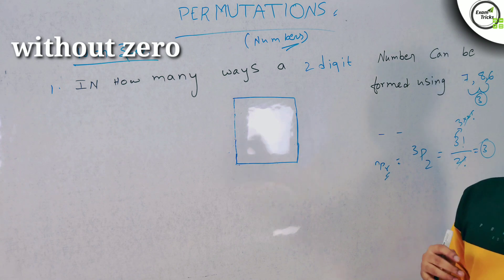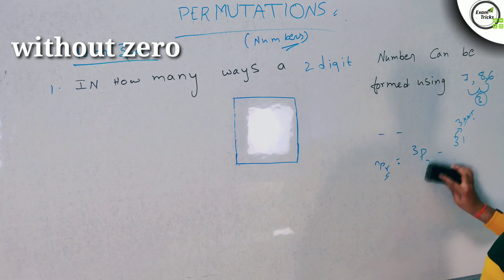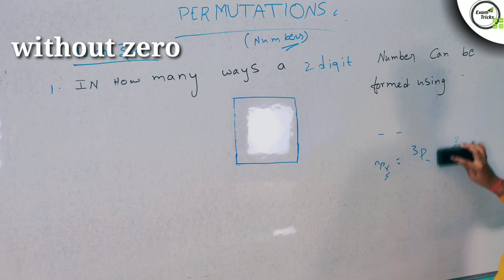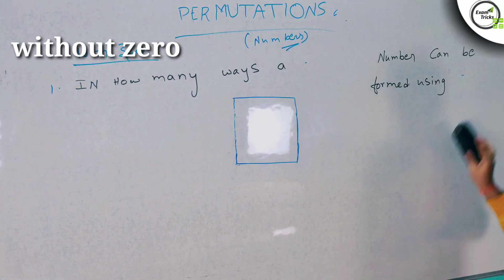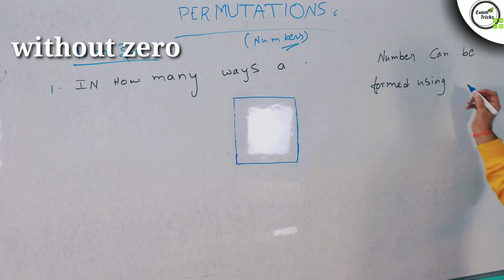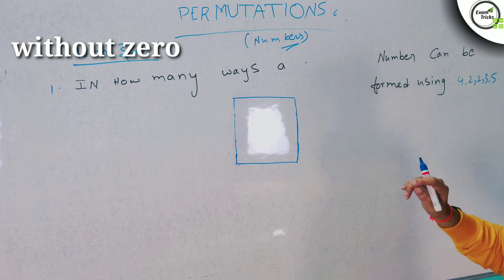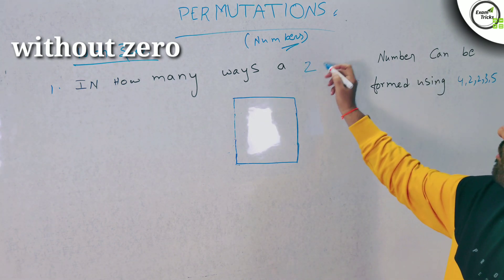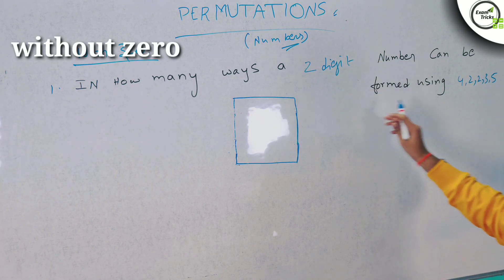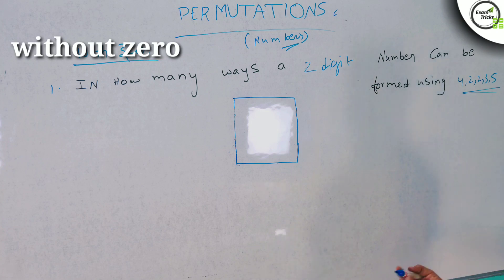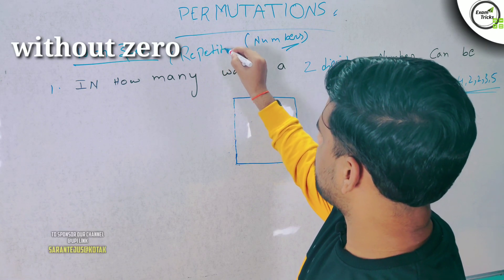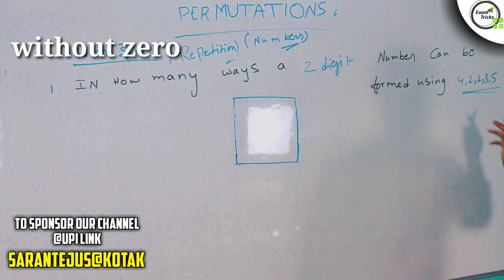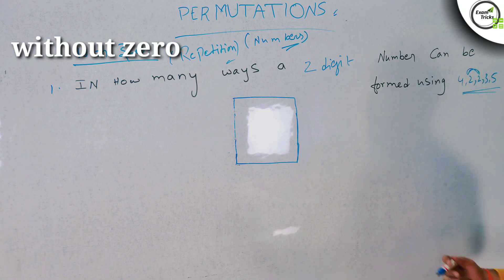Now we have a different question involving a complication. The digits are 4, 2, 2, 3, 5 — we have 5 digits and we need to form a 2-digit number. Notice here there is a repetition — the digit 2 appears twice. In the previous questions, numbers were not repeated, but here a number can repeat. That is the specialty of this model.